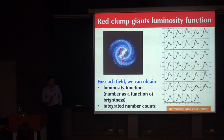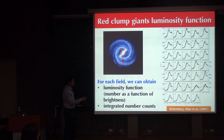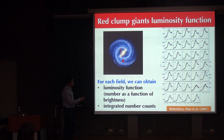In a particular field, what do we see for these red clump stars? We observe the so-called luminosity function — the number counts of stars as a function of luminosity or magnitude. This shows the color-magnitude diagram and number counts as a function of luminosity for 34 fields. For each direction, we integrate the luminosity function to obtain the total counts of red clump giants in that particular direction.